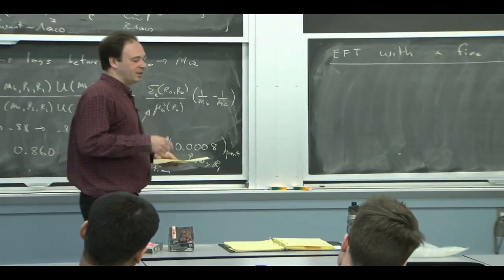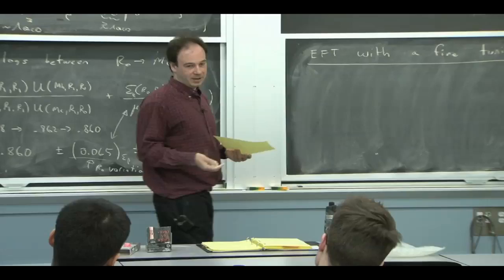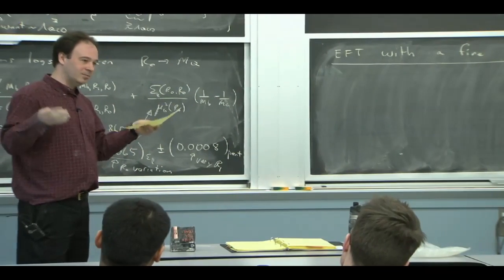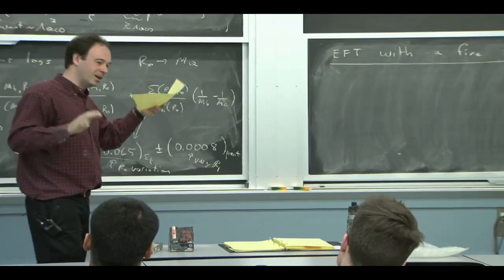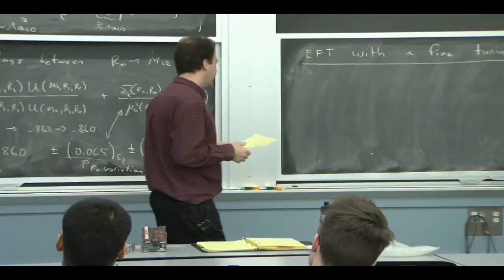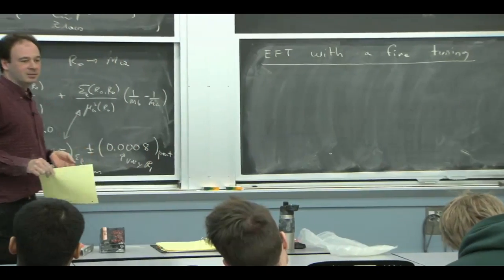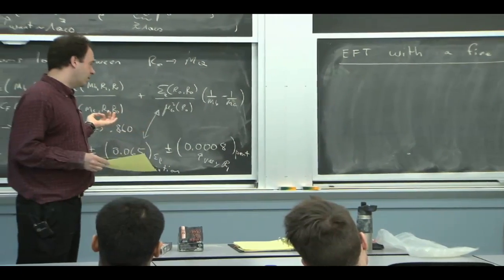To change your power counting such that it takes into account the existence of that fine tuning, builds the whole effective theory around the idea that there was this fine tuning from an original, perhaps, dimension counting point of view, but that we can adopt a different power counting that actually organizes the physics in exactly the right way that we want to.